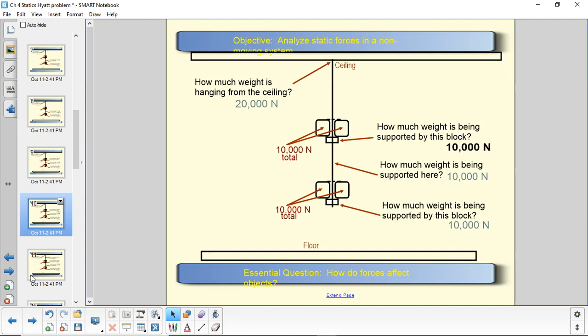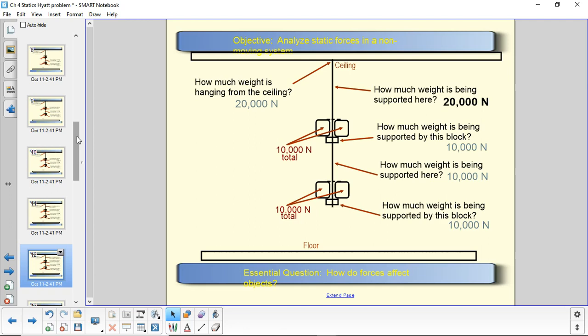Moving on up, how much weight is being supported by the steel rod up here? This, hopefully, will be pretty easy. 20,000 newtons. And then, again, as we saw, then the 20,000 newtons is being transferred to the ceiling. So that's how all the forces stack up on this.